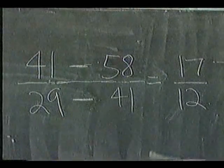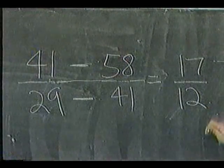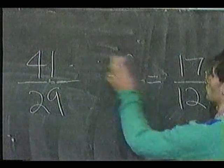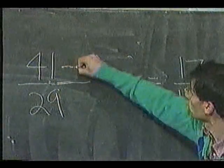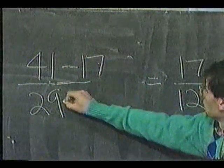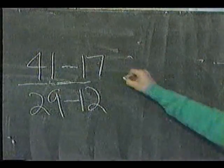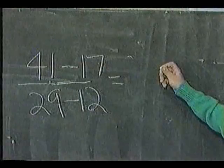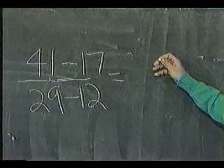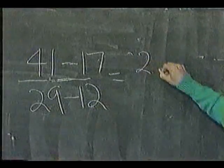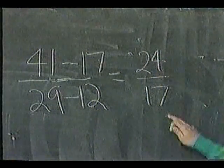Well, you see, now I'm working backwards. If 17 over 12 is equal to 41 over 29, then I can also go 41 take away 17 over 29 take away 12. It's still equal.